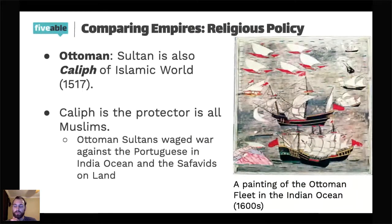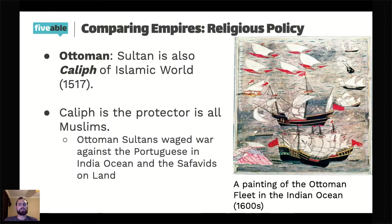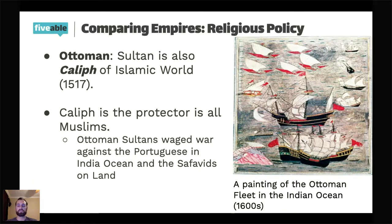Judith asks whether we can assume relations between the Abrahamic religions were positive during this time. As a blanket statement, no — relations between Muslims, Christians, and Jews were not positive all the time. But there are very notable instances of cooperation and tolerance. The question of why tolerance was practiced is interesting — was it genuine curiosity, like Akbar seemed to have, or realistic political calculation? The answer is probably a little bit of both.